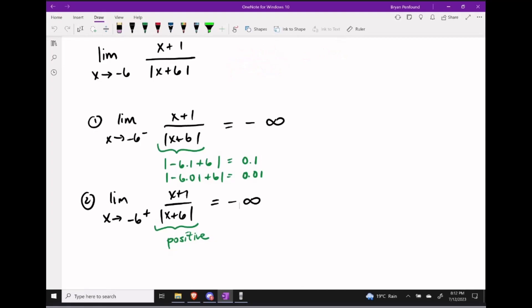Since both of our one-sided limits are unbounded and tending towards negative infinity, we can now say that the overall limit does not exist, but we're going to write this in a nice mathematical way. We're going to say that there's a vertical asymptote here, and our y values are tending towards minus infinity as we get close to that vertical asymptote of negative 6.